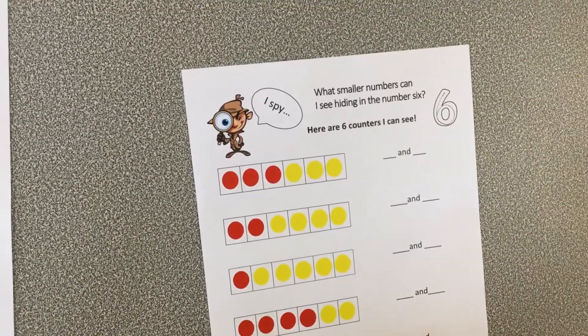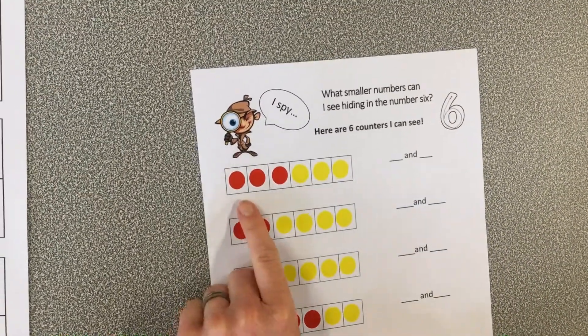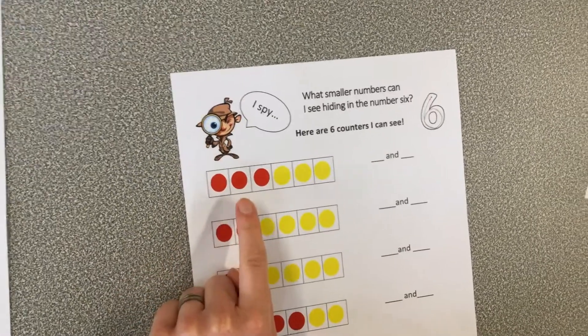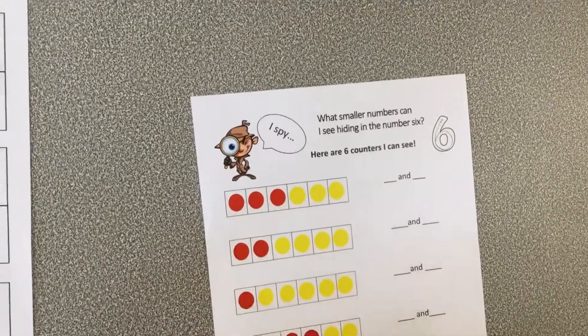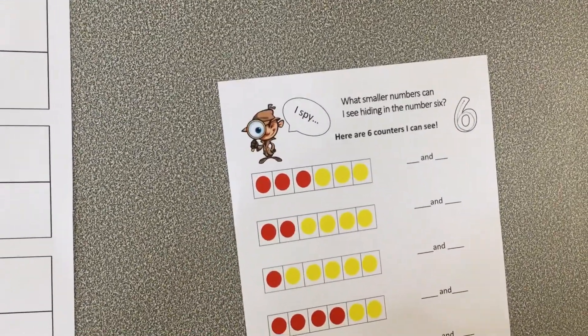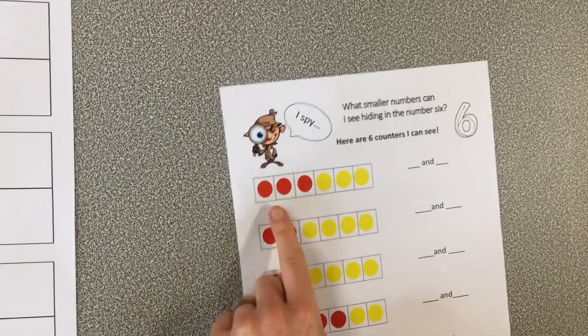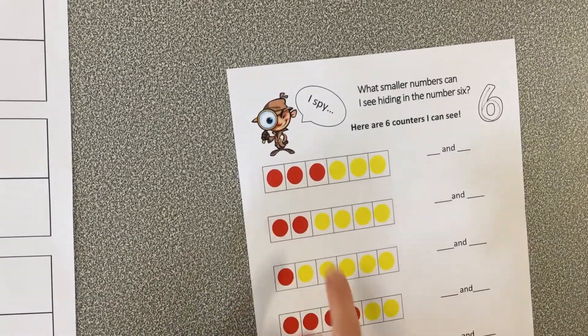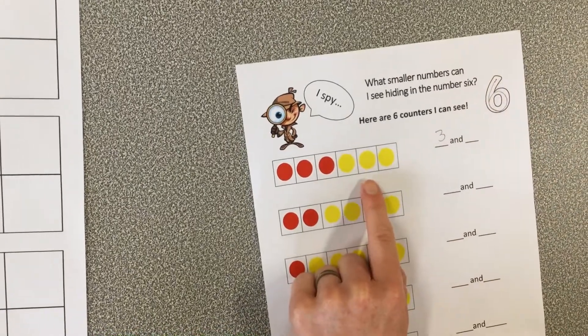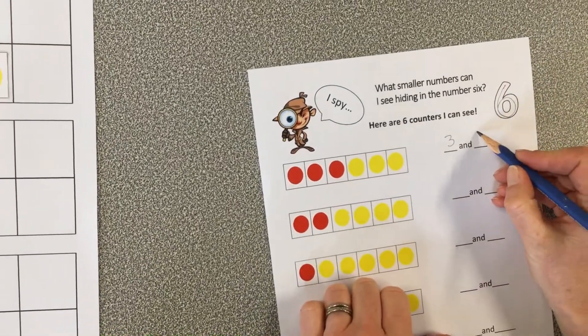I wonder if you can subitize right now and work out what this group of six is partitioned into. Remember, partitioned means breaking it into smaller parts. I can see a group of three and a yellow group of three.